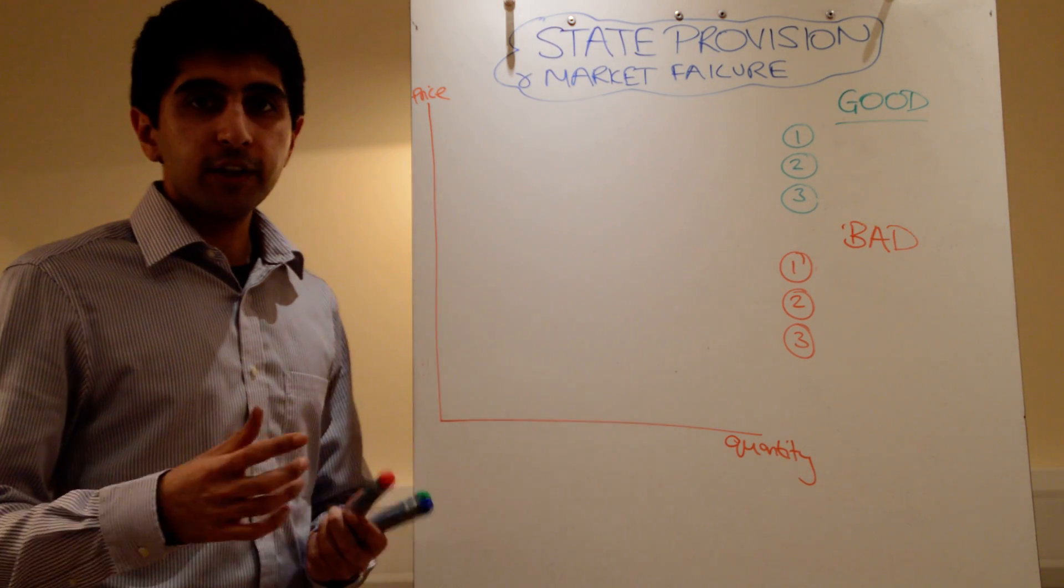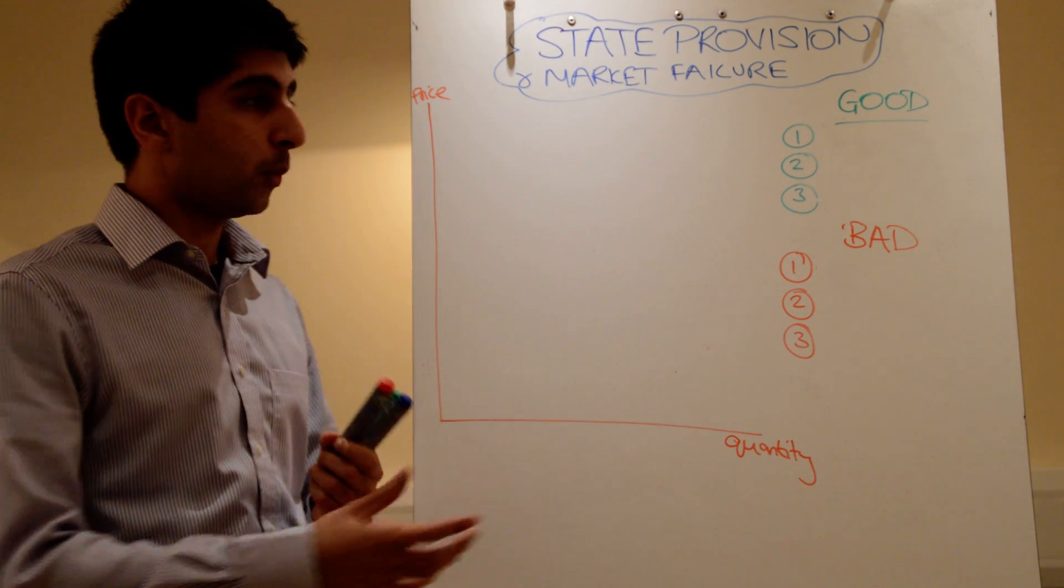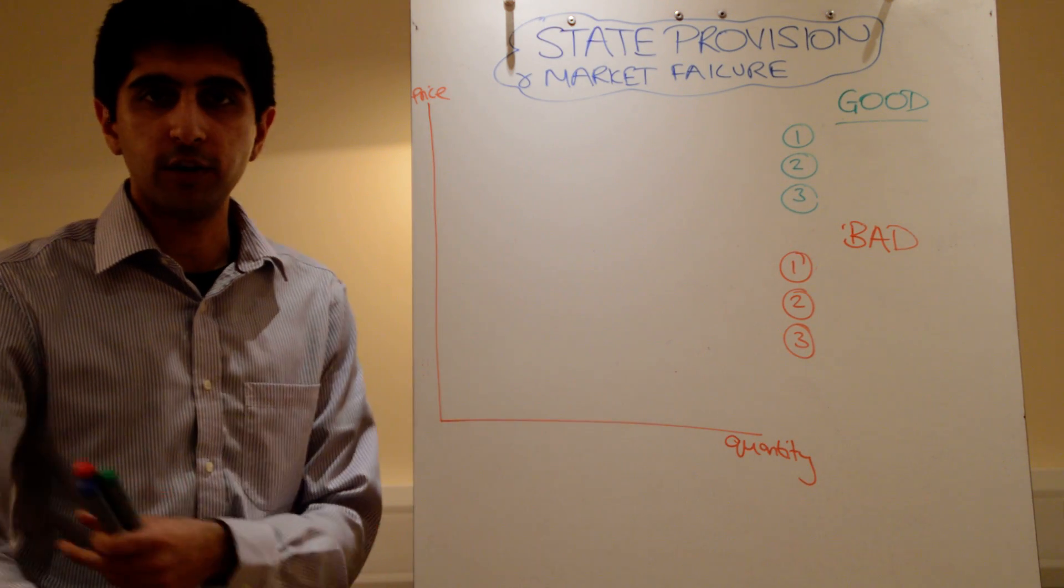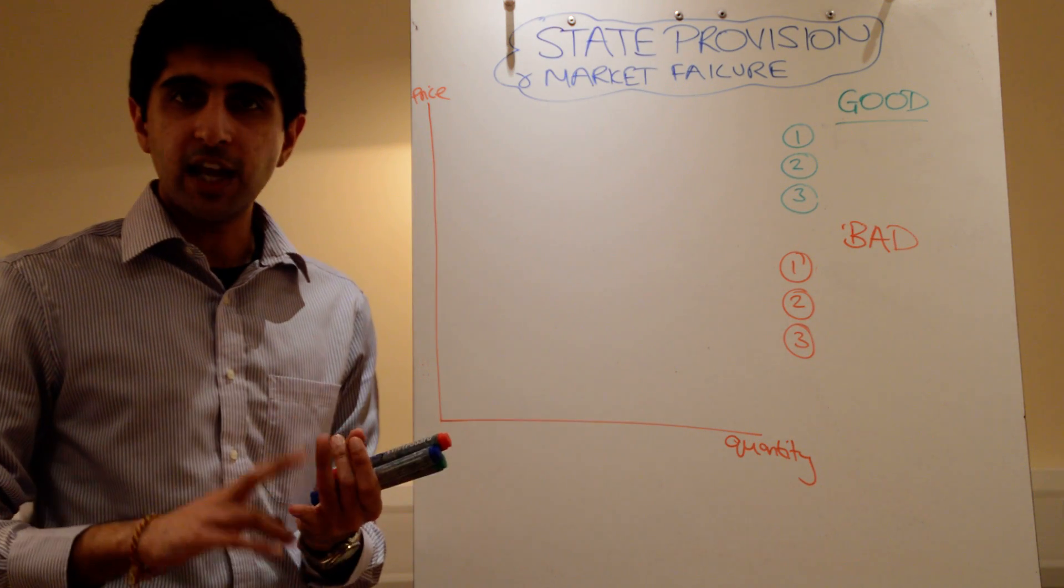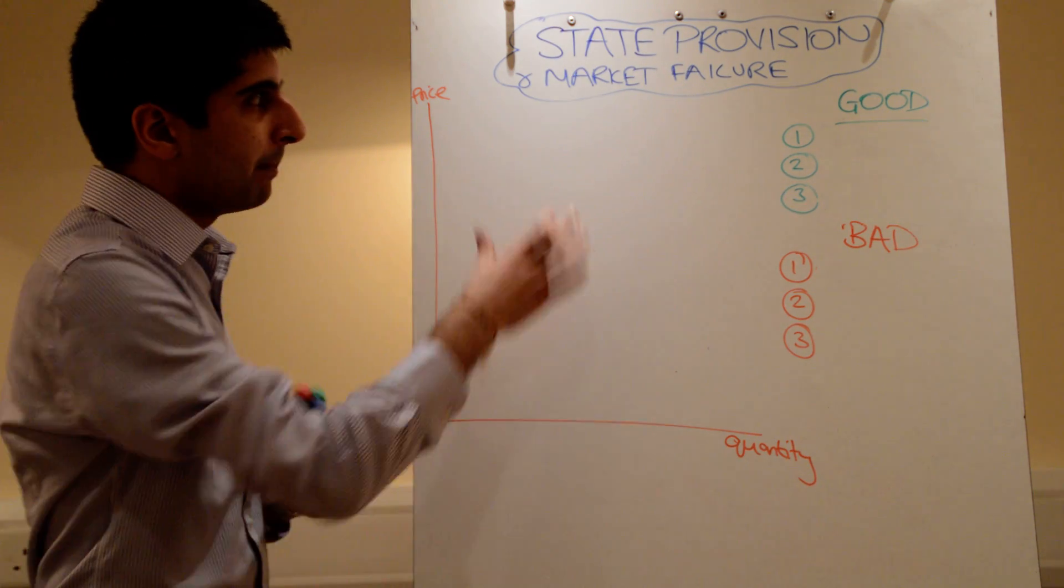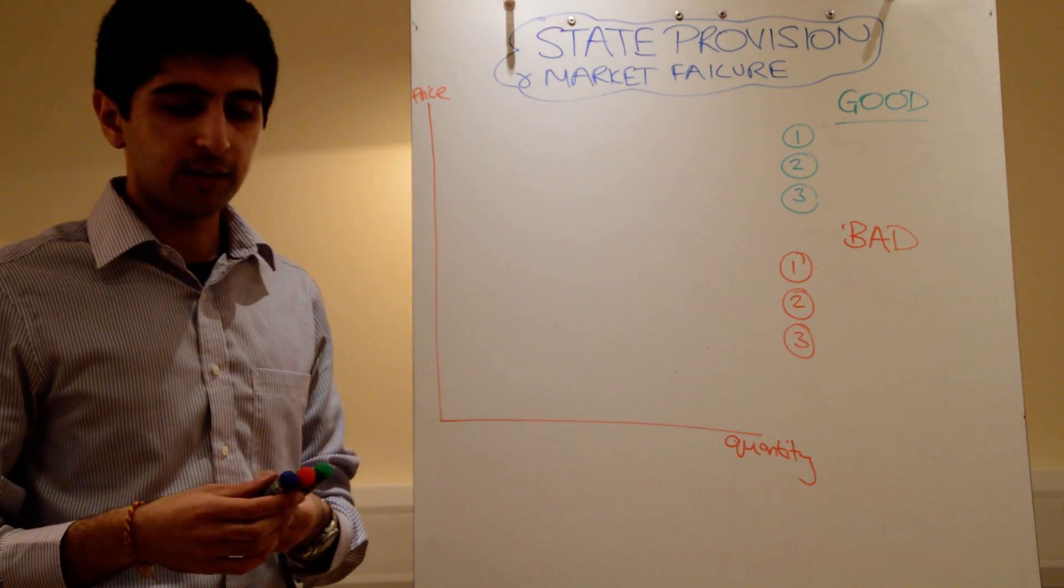So, for public goods it's a good thing because there is a missing market. Without state provision there would be no public goods. For merit goods it could be argued that these goods are so socially desirable, education and healthcare for example, that it makes rational sense for the state to provide them.